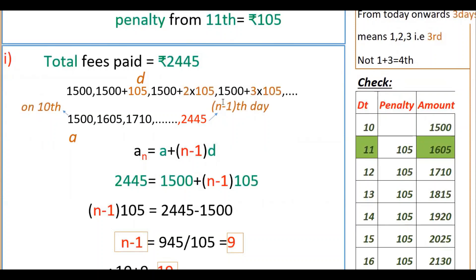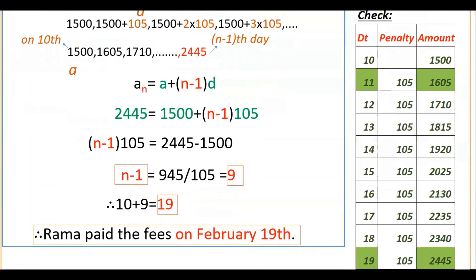So we need to find N minus one days. Using the formula Aₙ = A + (N−1)×D, we get 2445 = 1500 + (N−1)×105. Therefore (N−1)×105 = 2445 − 1500 = 945 rupees. So N−1 = 945 ÷ 105 = 9 days. Taking 10 plus 9 gives the 19th day. Therefore, Rama paid the fees on February 19th.